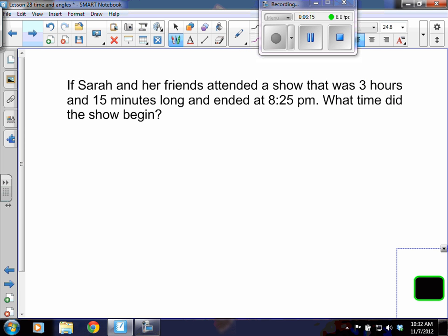Okay? Sometimes the clock is not given to us, though. And we're just given an analog number to understand. For example, if Sarah and her friends attended a show that was 3 hours and 15 minutes long and ended at 8:25 PM, what time did the show begin? And so we know that the end time was 8:25 PM. And we want to know what time it began. And it says that it was 3 hours and 15 minutes long. So that means 3 hours and 15 minutes before 8:25 PM is when it started.